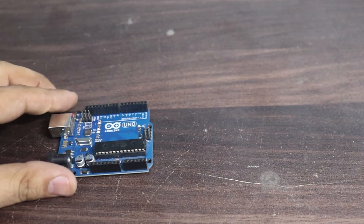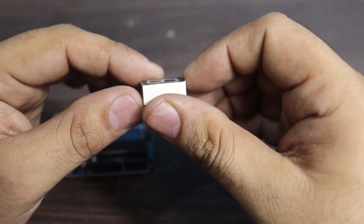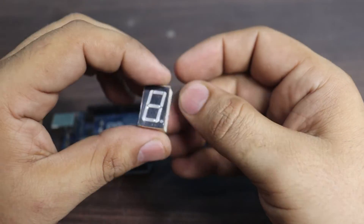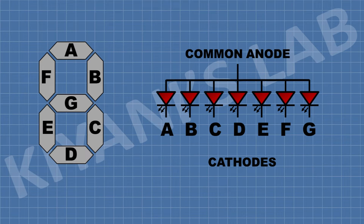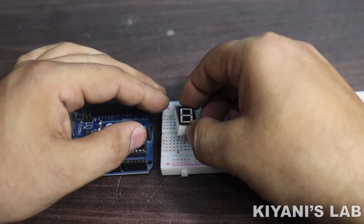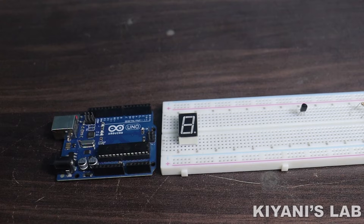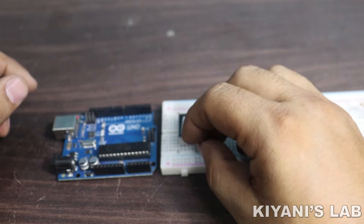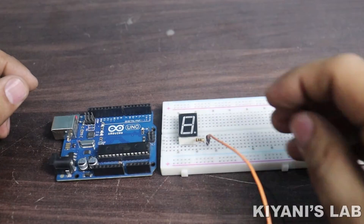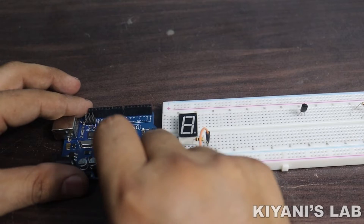Now let's connect the 7-segment display to Arduino. This is a common anode 7-segment display, meaning the anode of all LEDs is connected together. Their cathodes will be connected to the controller to display digits. Connect a 100-ohm resistor with one pin to the common terminal of the 7-segment and the other pin to the 5V pin of the Arduino.